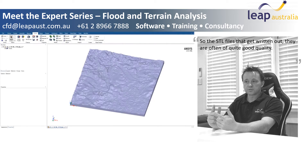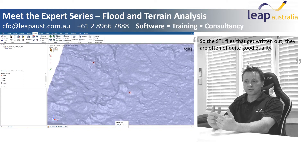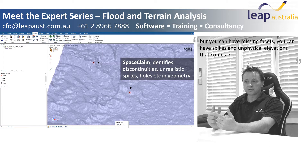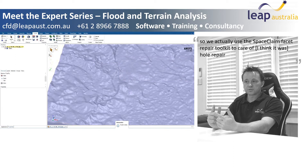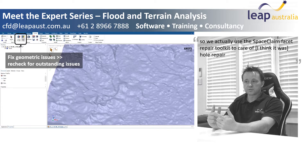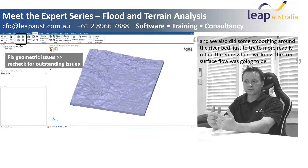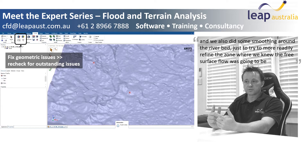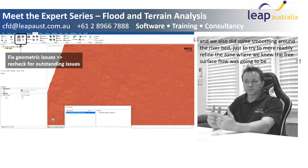The STL files that get written out are often of quite good quality, but you can have missing facets, spikes, and physical elevations that come in. We actually used the SpaceClaim facet repair toolkit to take care of both — I think it was hole repair — and we also did some smoothing around the riverbed to more readily refine the zone where we knew the free surface flow was going to be.